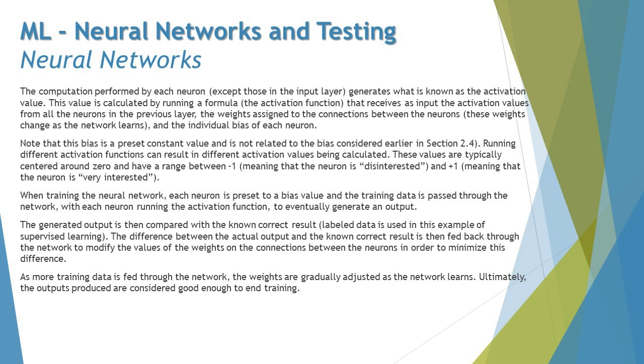These values are typically centered around zero and have a range of negative one, which is like disinterested, to positive one, which means very interested. When training the neural networks, each neuron is preset to a bias value, and the training data is passed through the network.